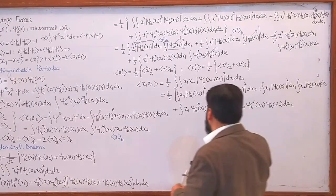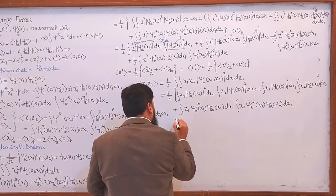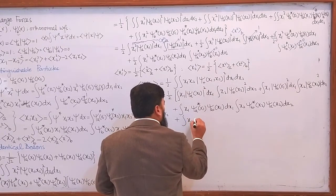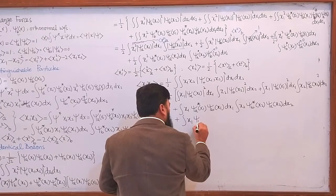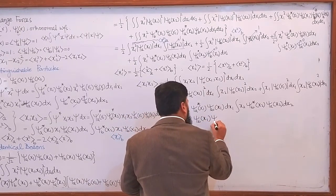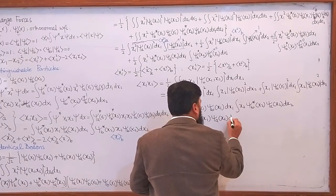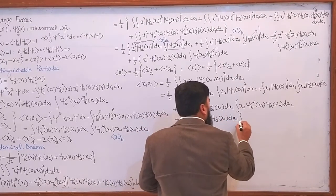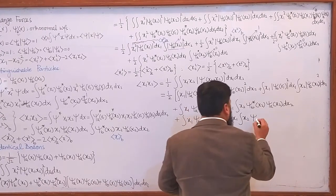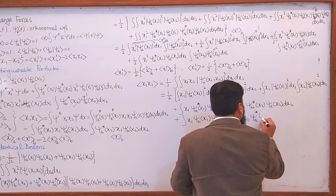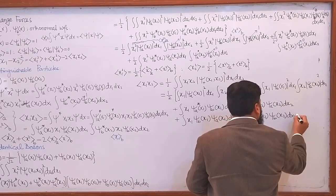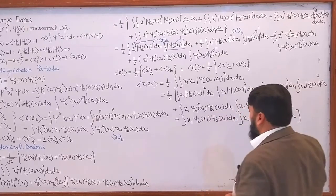Plus the next cross term — by symmetry it will be: integral of x1 times ψ_b(x1) times ψ_a(x1) dx1, multiplied by integral of x2 times ψ_a(x2) times ψ_b(x2) dx2. The same multiplication here as well, but the difference is that in the diagonal terms we have x1 only or x2 only, whereas here we have x1 and x2 both. Now you will recognize some terms here.